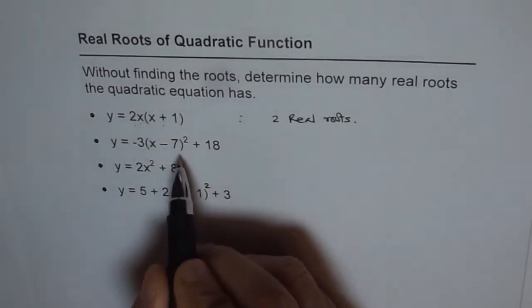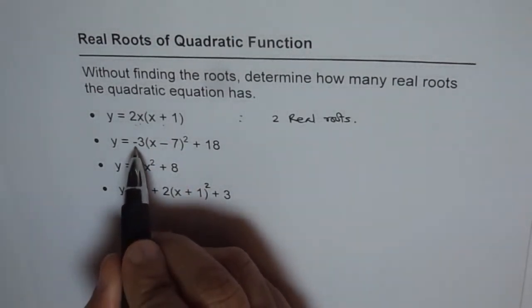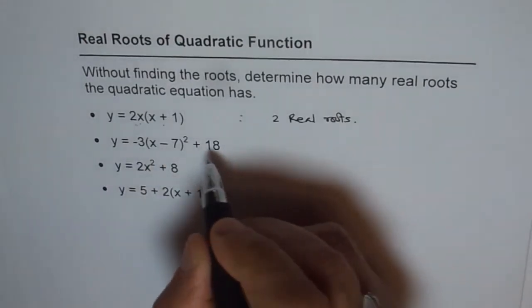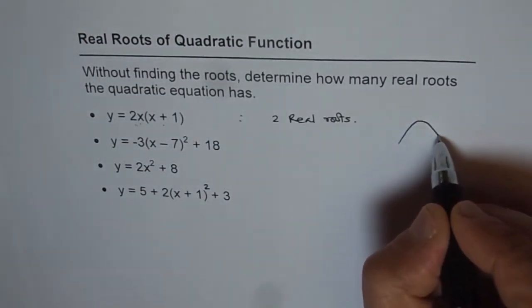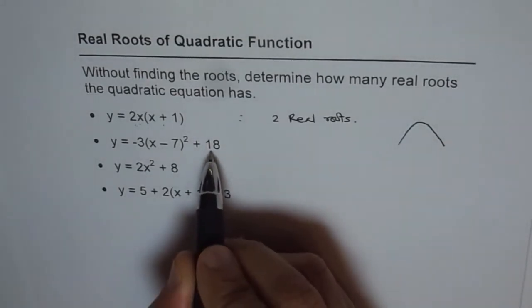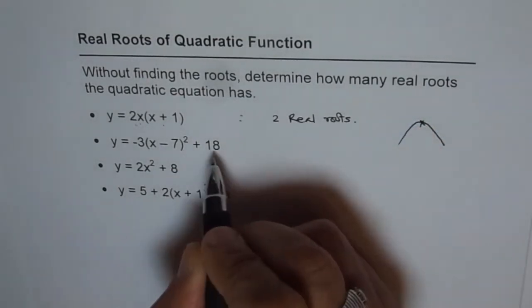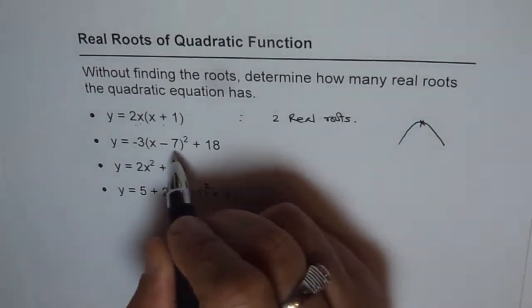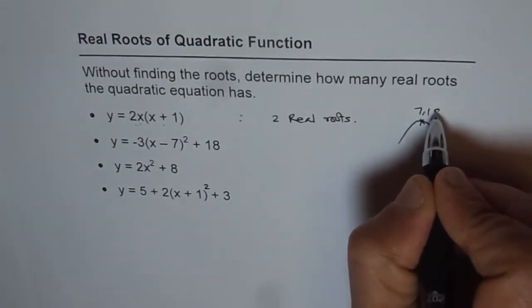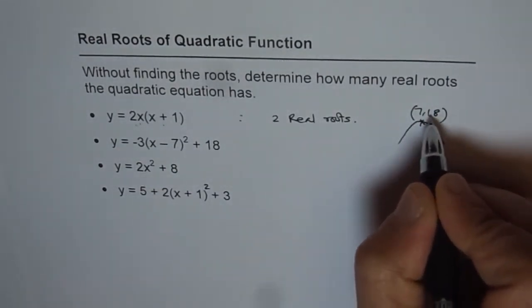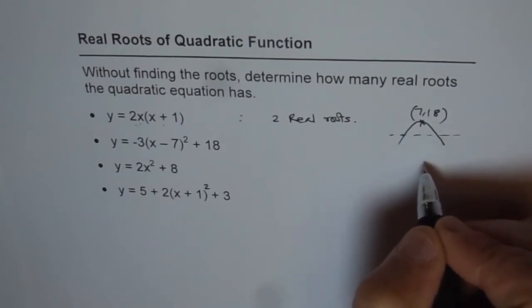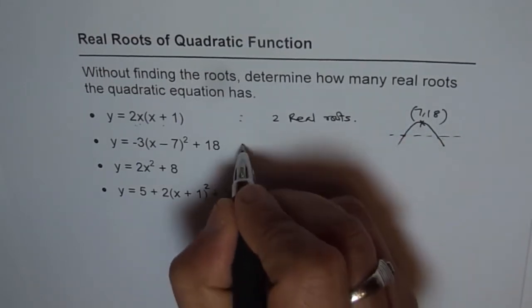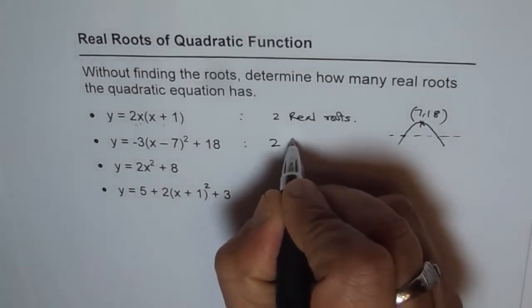Now the second equation is in the vertex form. Minus says that the parabola is going to open downwards. So this minus means the parabola is going to open downwards. And plus 18 means that the vertex is positive 18 at 7. So the point is 7, 18. Now since it is positive and it opens downwards, it will definitely have 2 roots. It will cross x axis at 2 points. Therefore in this case also we have 2 real roots.